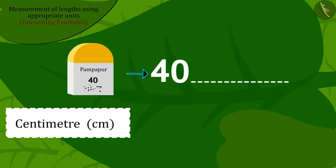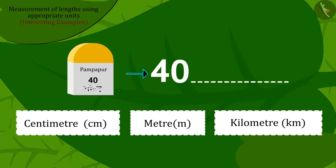Raju started thinking that the distance from Pampapur to there was written on that stone. Now, which unit should be written in front of 40, so that the people going there can get the correct idea of distance to Pampapur? Kids, can you help Raju?